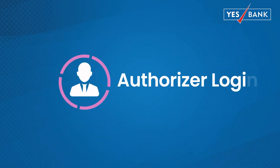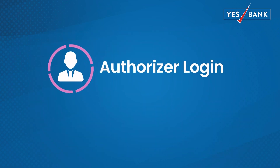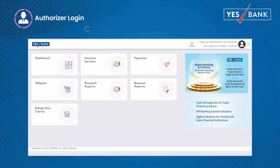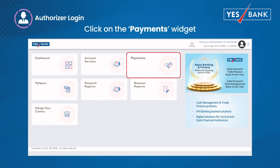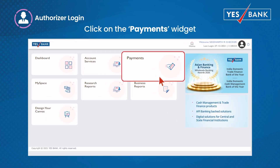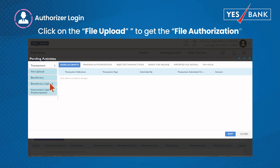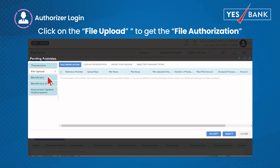For the authorizer login, the authorizer can log in to the Yes Bank net banking website and click on the payments widget. On the payment home page, click pending activities on the top menu, then click on file upload to get the file authorization tab.